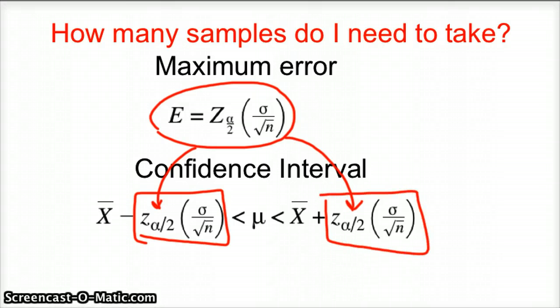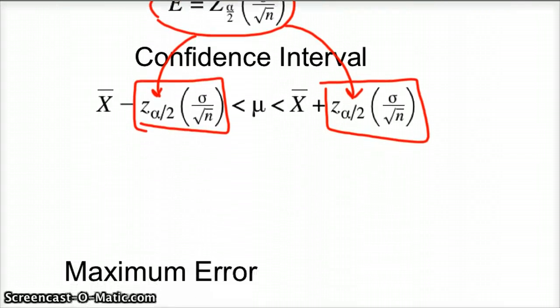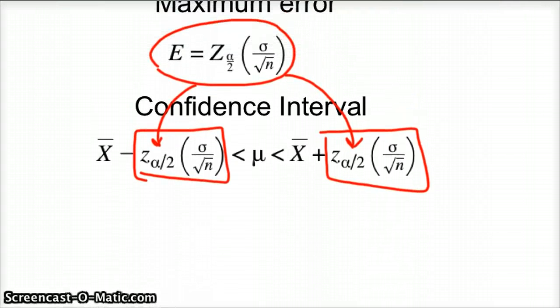And so we're going to take that maximum error and rearrange it. So let's just go ahead and solve that thing. So z alpha divided by 2 times sigma over the square root of n. And again, sigma is standard deviation.